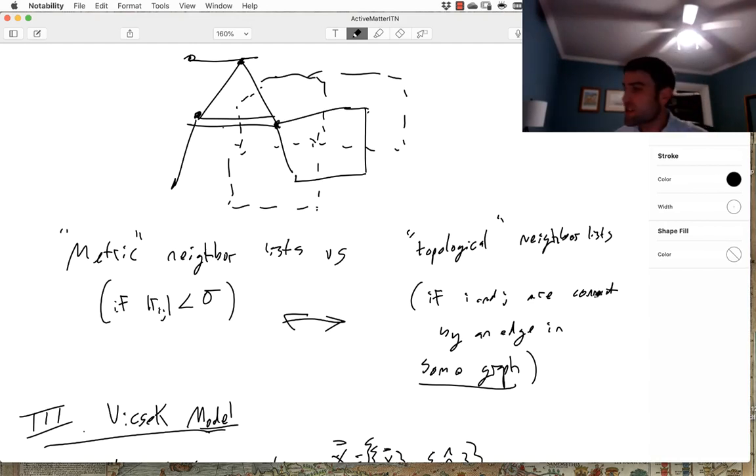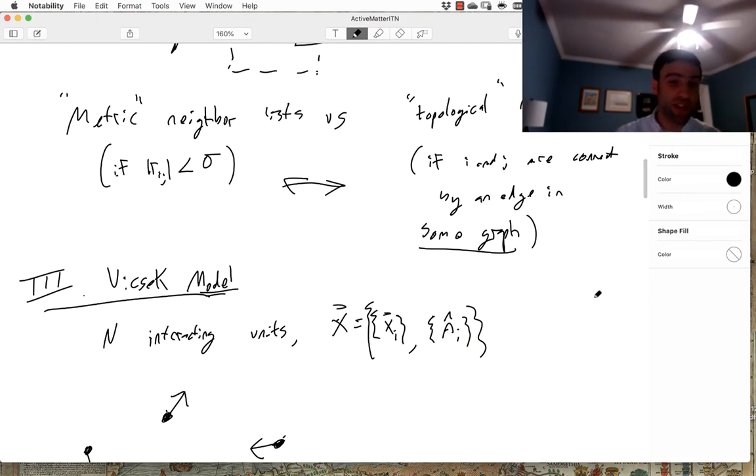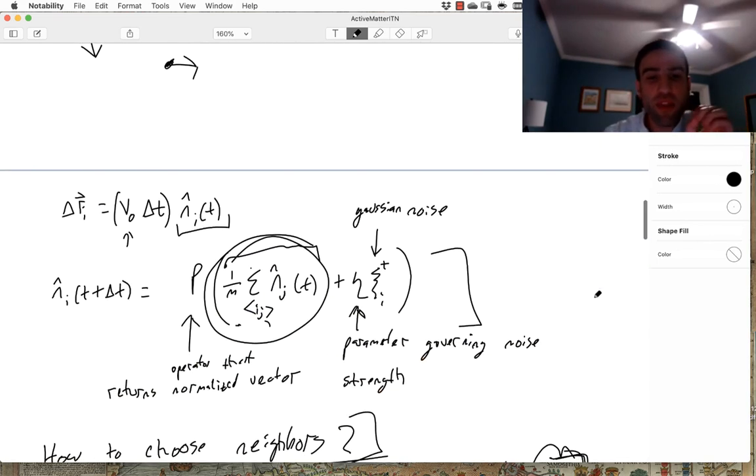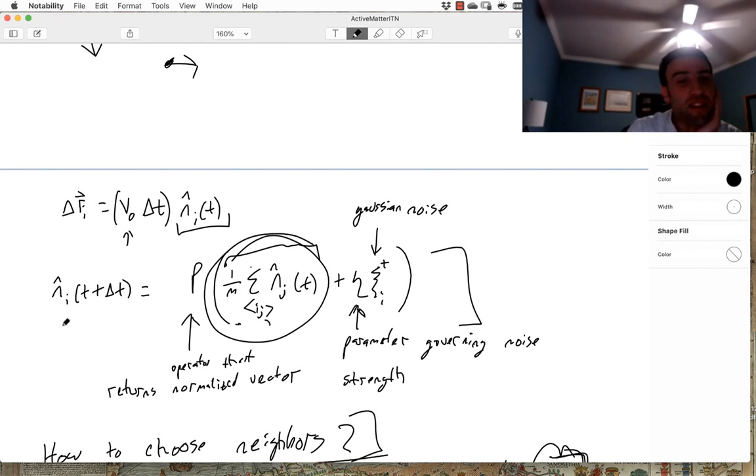Okay, so in the last short lecture segment, we talked about the V-check model, which was a canonical active matter model, and we thought about the difference between taking exactly the same set of update rules. Move the positions according to the self-propulsion in some direction, and update the direction according to the average direction of the neighbors of some particle plus some noise. I thought it might be helpful just to see a visualization of some of the distinctions we're talking about.